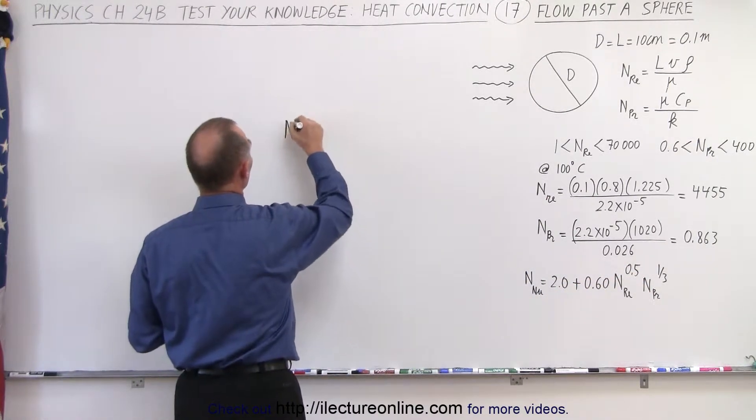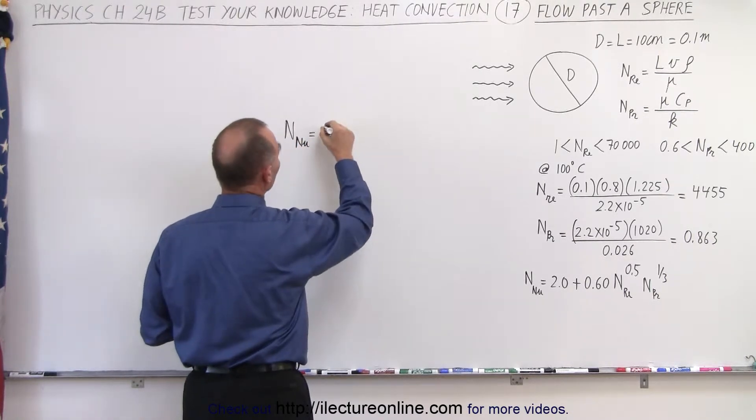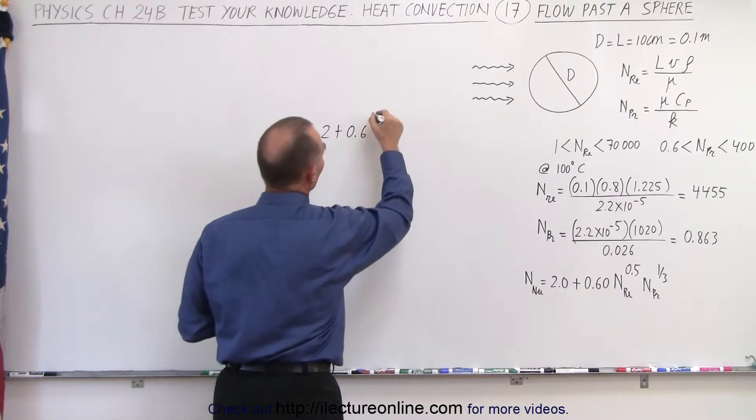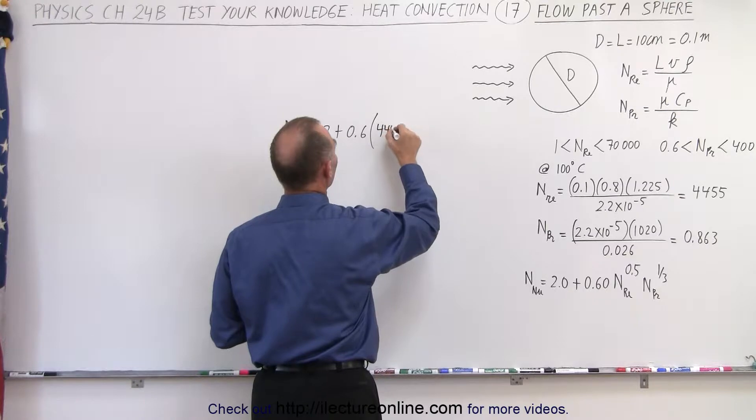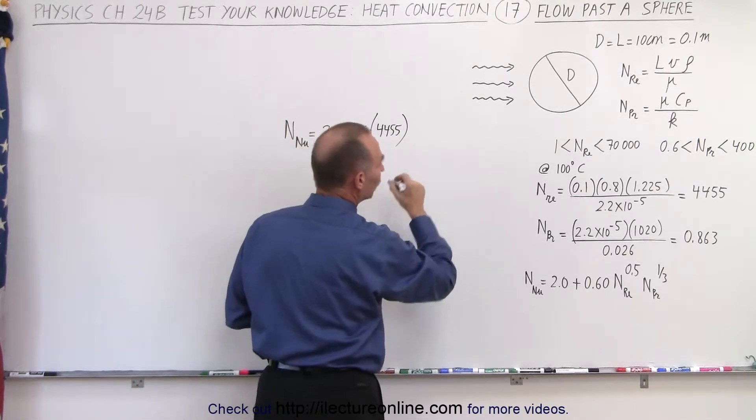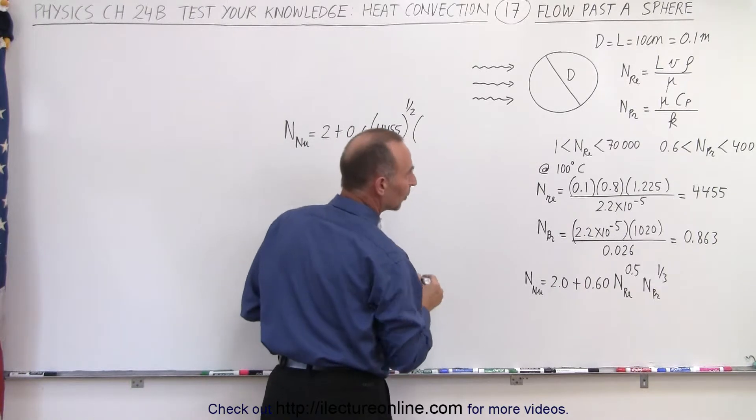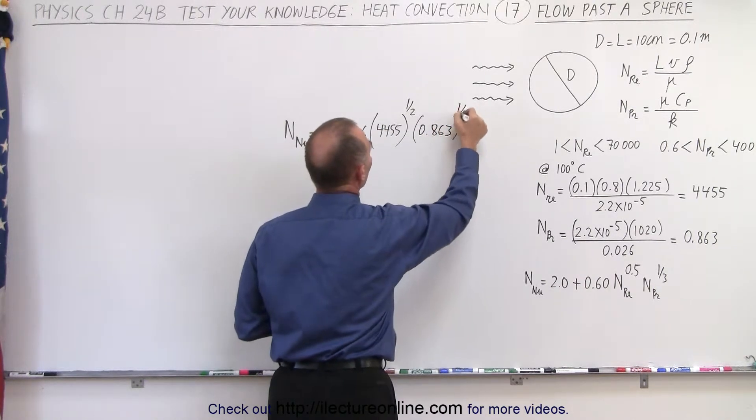So the Nusselt number on this particular sphere is equal to 2 plus 0.6 times the Reynolds number, which in this case was calculated to be 4455, raised to the one-half power, and then multiply times the Prandtl number which was 0.863 raised to the one-third power.